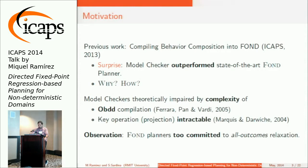To our surprise, our model checker outperformed the state-of-the-art forward planner PRP by Chris Moos in a specific set of instances, which were non-trivial instances. They actually made sense — it's not some kind of server room kind of scenario; they actually made sense.